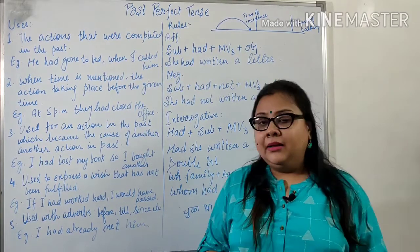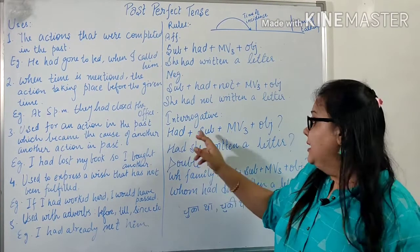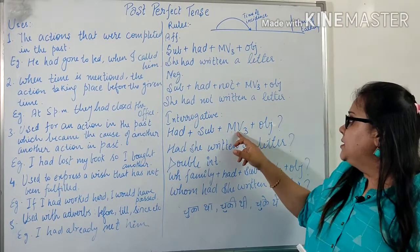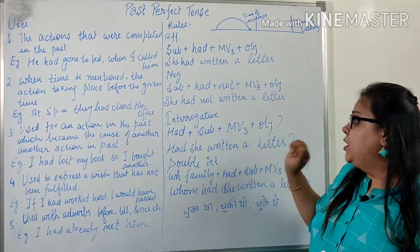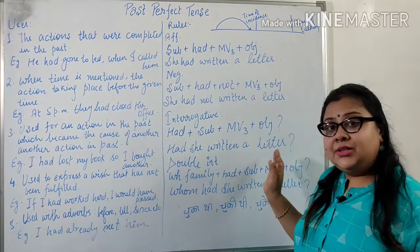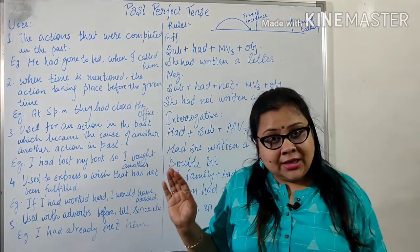Talking about interrogative sentences: 'had' will come first, and then the subject will follow. So the structure is: Had + subject + main verb third form + object. For example: 'Had she written a letter?' — kya woh letter likh chuki thi?